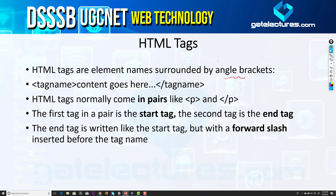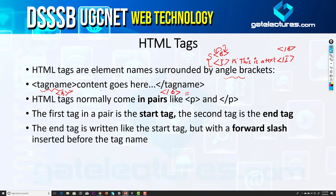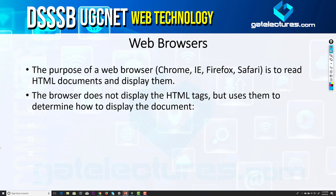HTML tags are elements whose names are surrounded by angular brackets. For example, I can write an italic tag like this with slash I as the closing tag, or I can use slash B for bold, and different types of tags. These tags are surrounded by angular brackets. The starting tag is like B and the ending tag is slash B — that's for bold character. Content goes between these two tags. HTML tags normally come in pairs: a start tag and an end tag. The end tag is always written with a forward slash, indicating that it is the closing tag.